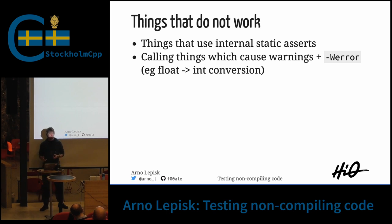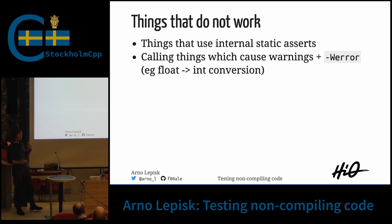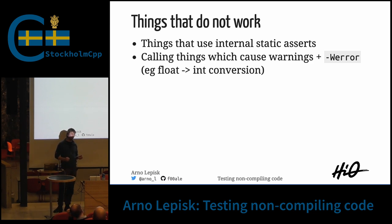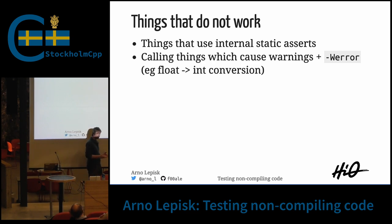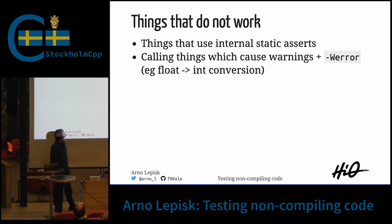There are, of course, things that this doesn't work for. Things that check more things, like an internal static_assert, can still fail — because that isn't evaluated by the type system but later in the compilation process. It can also fail for type conversions that generate warnings, and as you all do, you have warnings turned on as errors. Sadly, this will fail because the compiler in this phase only sees a warning, but when you try to compile it for real, it becomes an error.